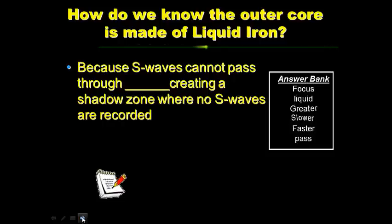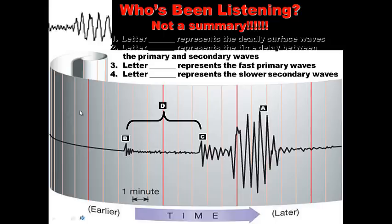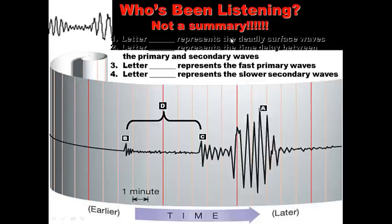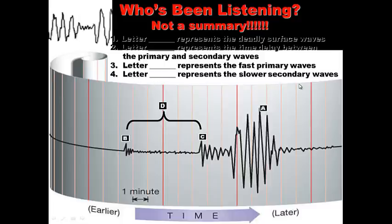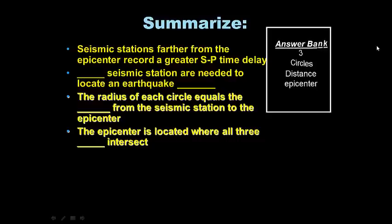Congratulations, you're done — except for the summary. See if you can determine which letter on the seismograph represents the deadly surface waves, which letter represents the time delay, which letter represents the fastest primary waves, and which letter represents the slower secondary waves. Quiz yourself, then go ahead and do the summary. Have a great evening — we'll see you next time.